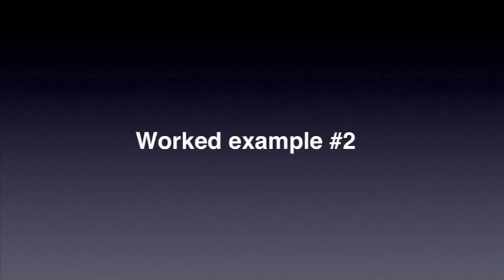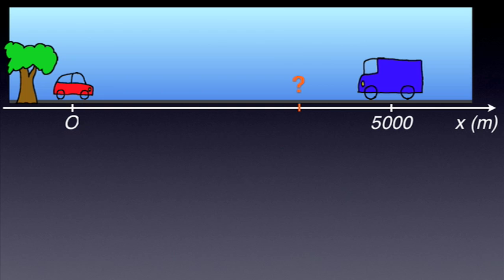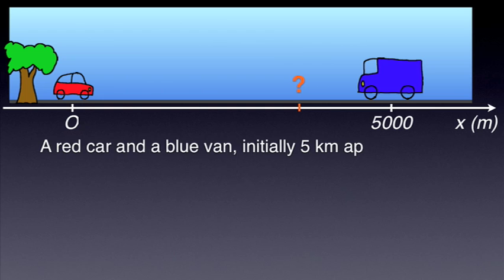Let's now move to a slightly more difficult example. A red car and a blue van, initially 5 km apart,